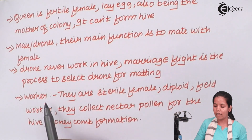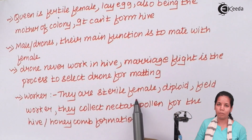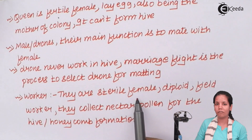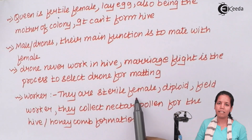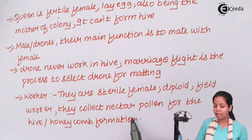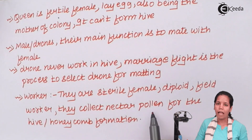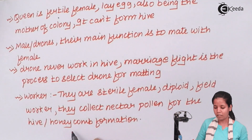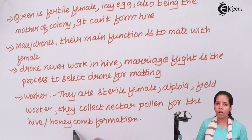Workers are sterile females — they cannot give birth. They are the working honeybees that collect nectar and pollen and help in the formation of the honeycomb or house.